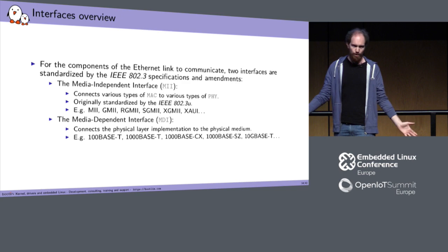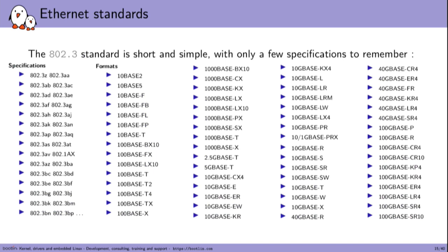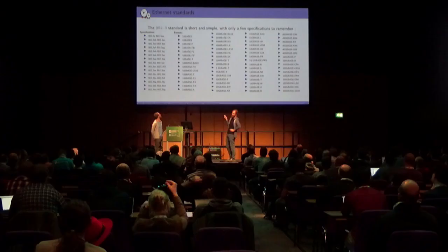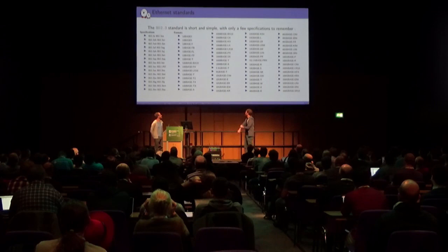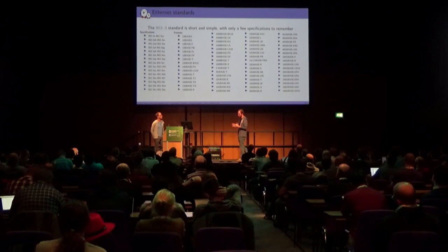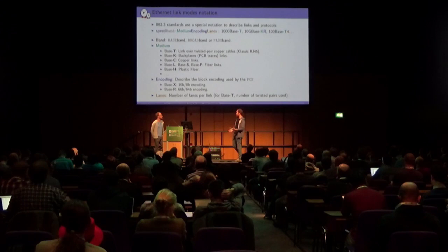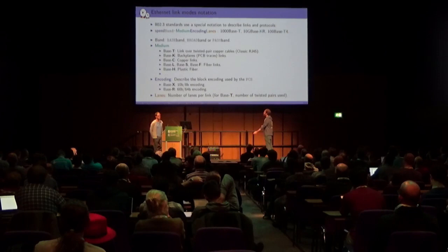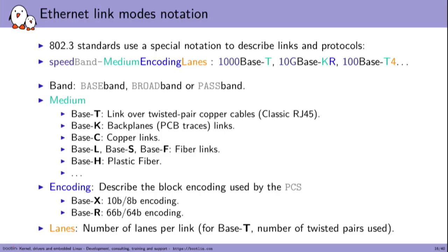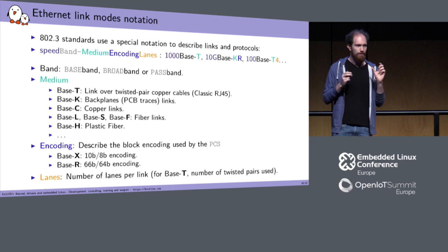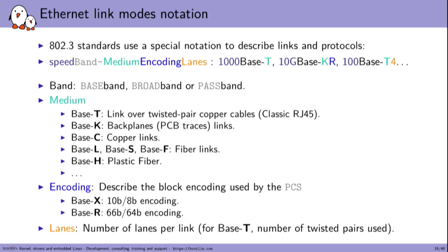An example is 1000BASE-T. The standard name follows a form: speed, band, medium, encoding, and lanes. The speed is the bandwidth at which you can send or receive data. The band — baseband, broadband, or passband — describes how the device understands the frequencies sent to it; baseband is the most common. The medium indicates the physical medium: T for twisted pair copper cable (RJ45), C for copper, H for plastic fiber, and many others.